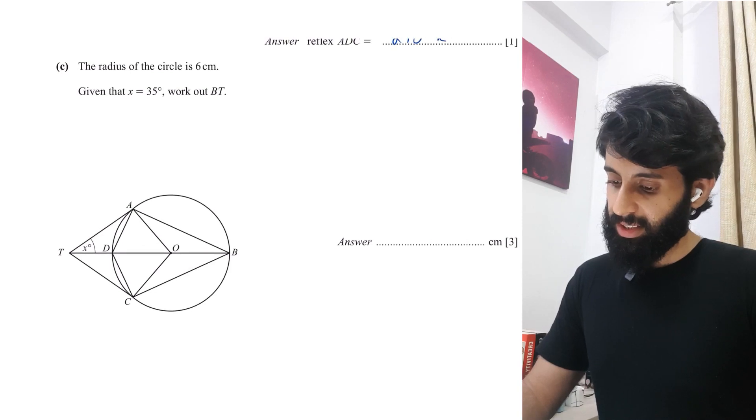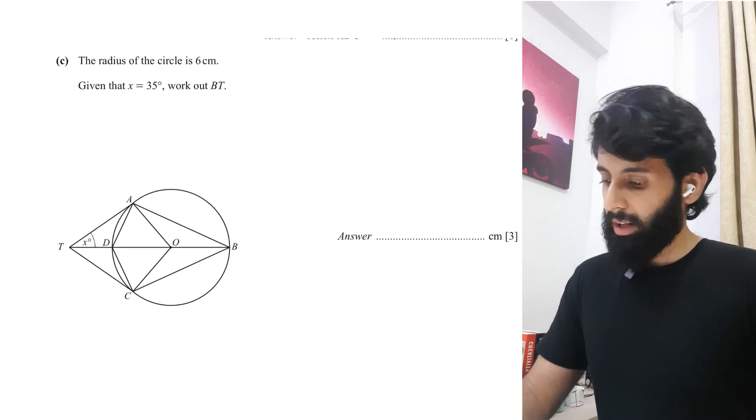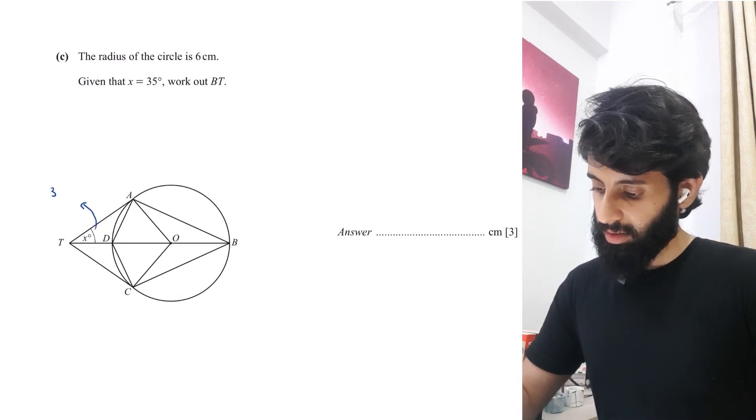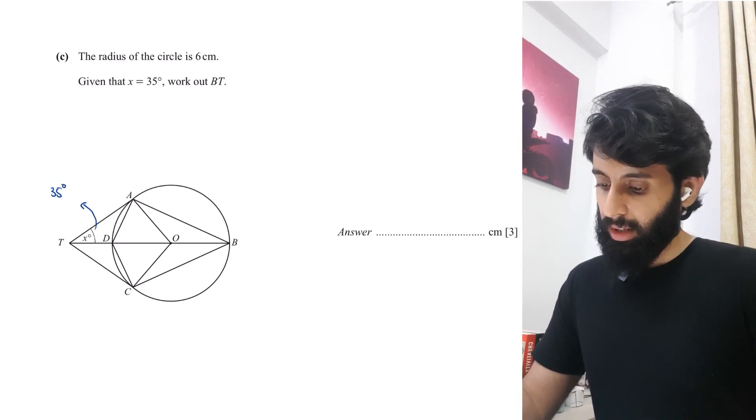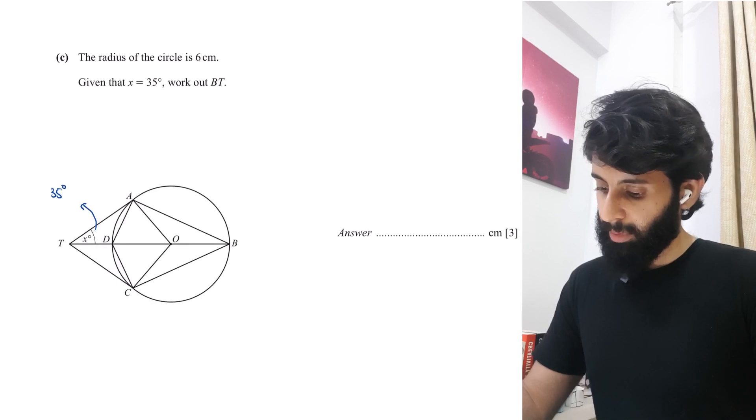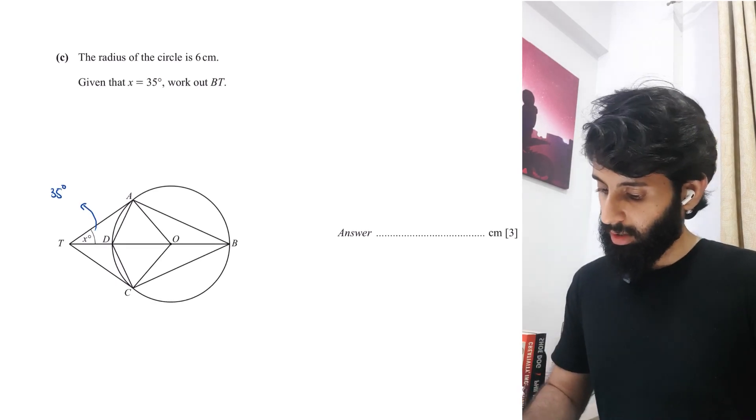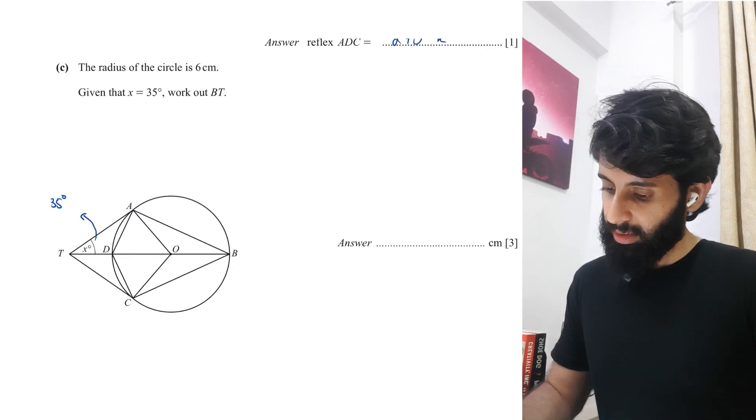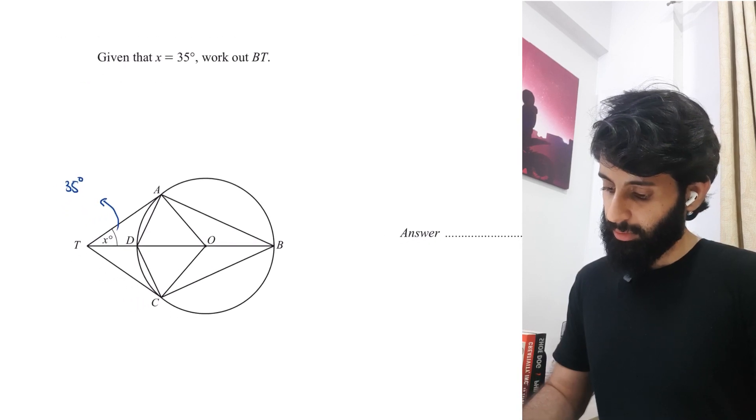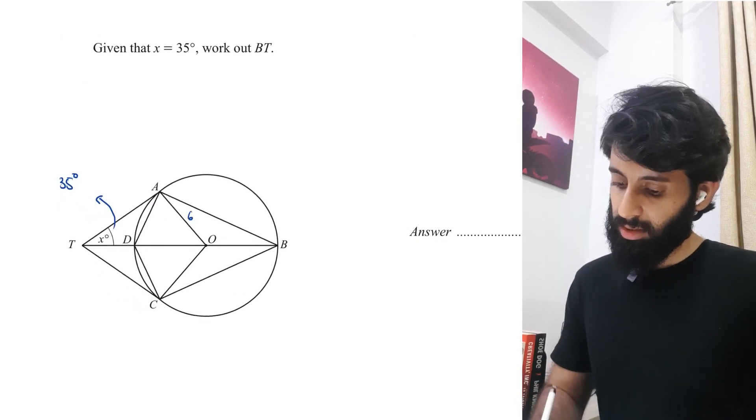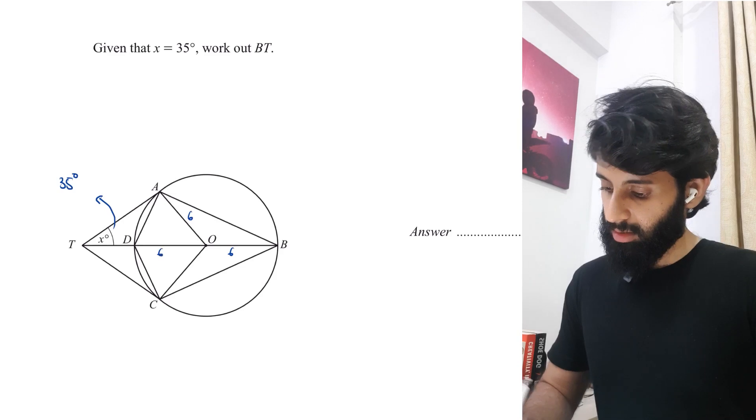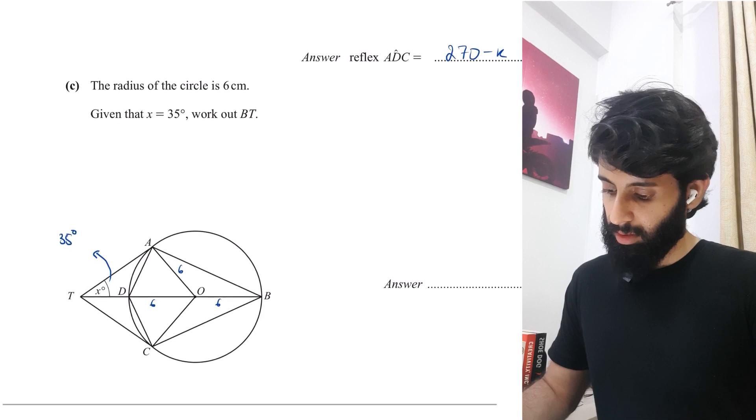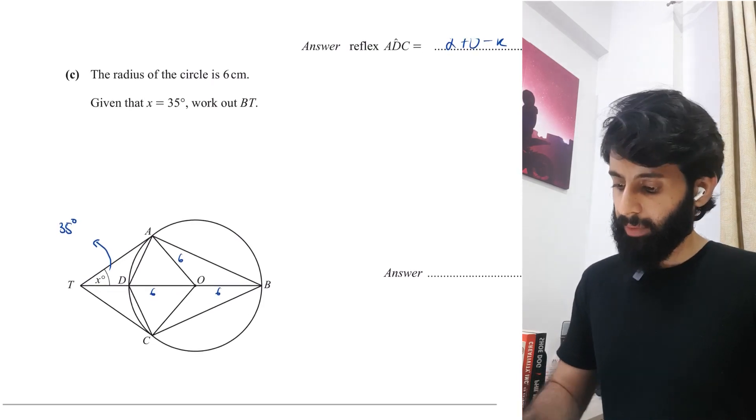Then it says the radius of the circle is 6 centimeters. Given that X equals 35 degrees, work out BT. X right here is 35 degrees. We need to work out BT, which is basically all of this. The radius is 6. So the fact that we know the radius means that this is going to be 6, this is going to be 6, this is going to be 6.